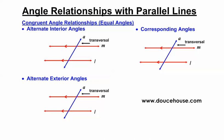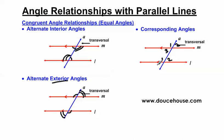Very quickly: alternate interior angles are inside the parallel lines - here's one example of alternate interior angles and another example. Alternate exterior angles are on opposite sides of the transversal but outside the parallels - here's one set of alternate exterior angles and another set. Corresponding angles are same spot but different location - they're both in the top left corner. Angle two and this angle here are corresponding angles. These angles are corresponding angles and these angles are corresponding angles.